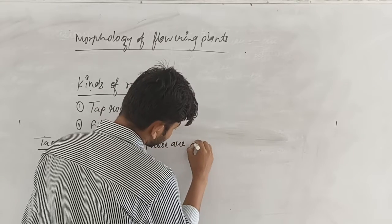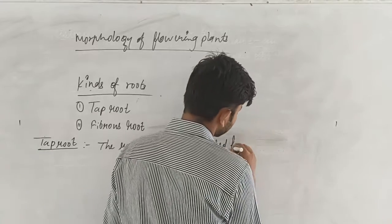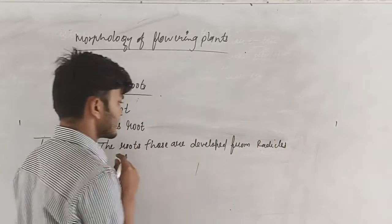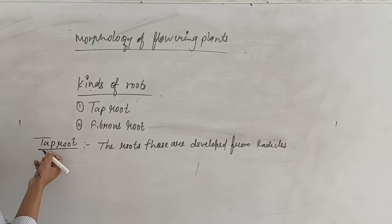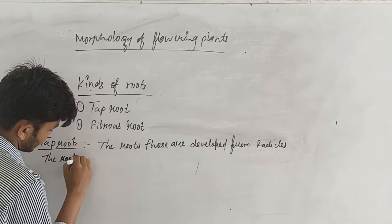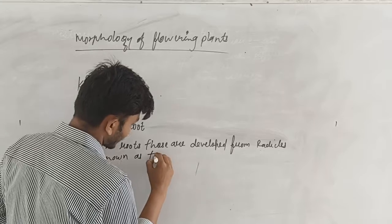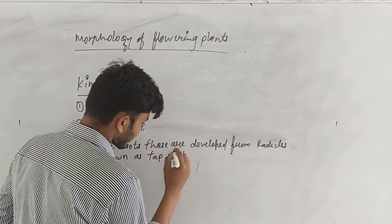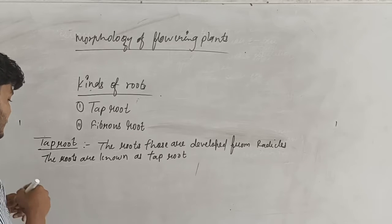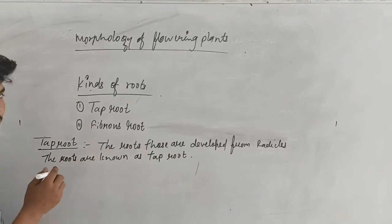Those are developed from radicals. The roots are known as tap roots. As the roots are known as tap roots, basically these are the roots. Tap roots to the roots.